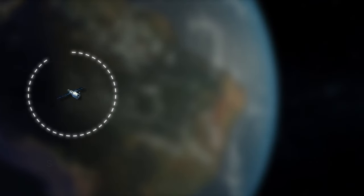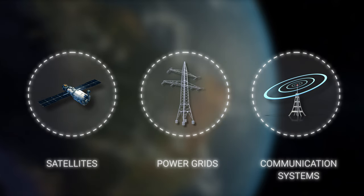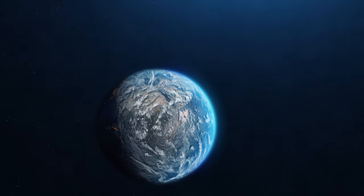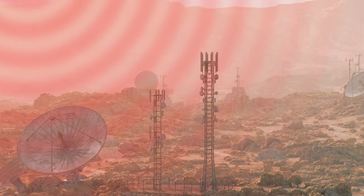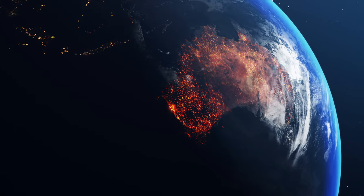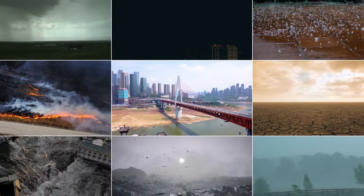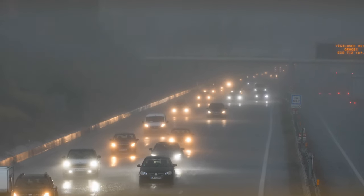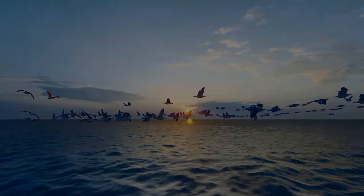However, scientists express concern about the vulnerability of our satellite networks, power grids, and communication systems. A weakened magnetic field could lead to increased solar radiation, potentially disrupting such critical technologies. Also, let's not forget about possible climate change. Although the exact effects are unknown, some models suggest that shifts in the magnetic field could affect weather patterns, potentially leading to extreme and unpredictable weather patterns.